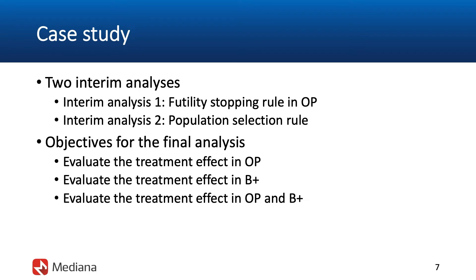The trial could be stopped due to superior efficacy, most likely in the overall population of patients at an interim assessment. The event count re-estimation rule could be considered, most likely at the time of the second interim analysis, to make appropriate adjustments with the goal of improving the probability of success. Rules for event count re-estimation in this class of adaptive trials are typically set up to be aligned with the population selection rules.